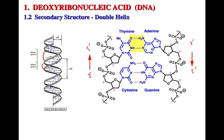Looking at the hydrogen-bonding interactions: thymine and adenine have two hydrogen-bonding interactions, while cytosine and guanine have three hydrogen-bonding interactions. In the interest of full disclosure, there are some instances where bases pair differently, but for this lecture we'll focus only on the most common type of base pairing.